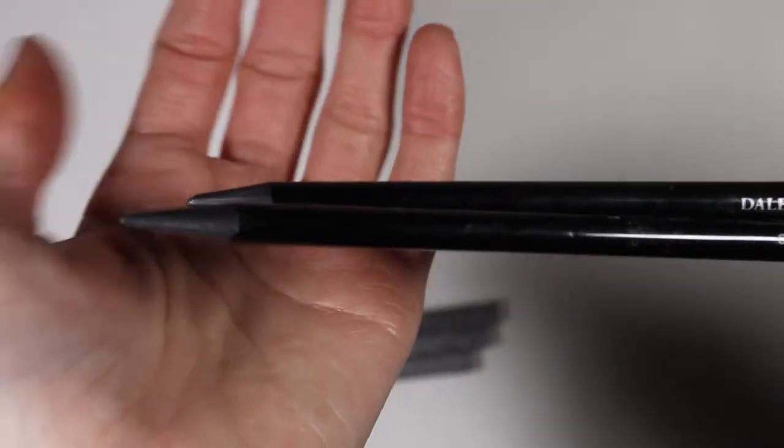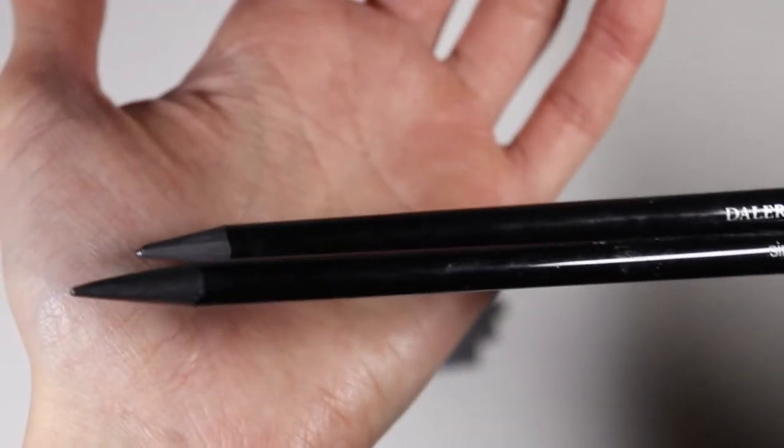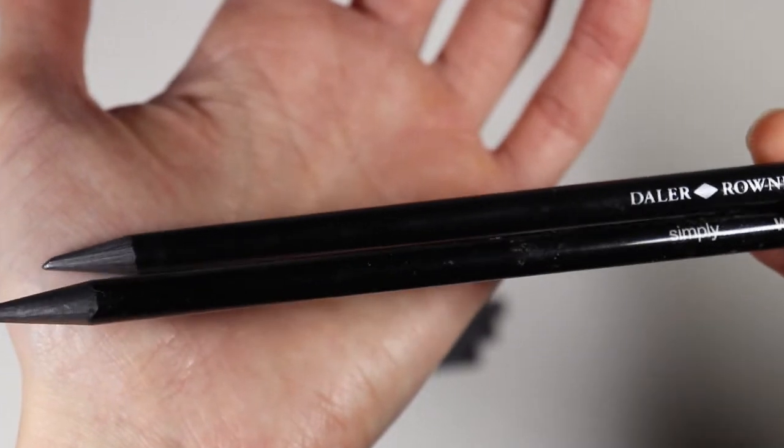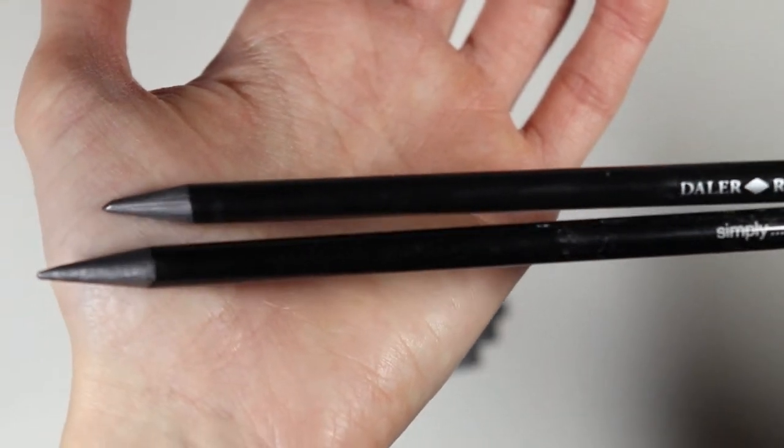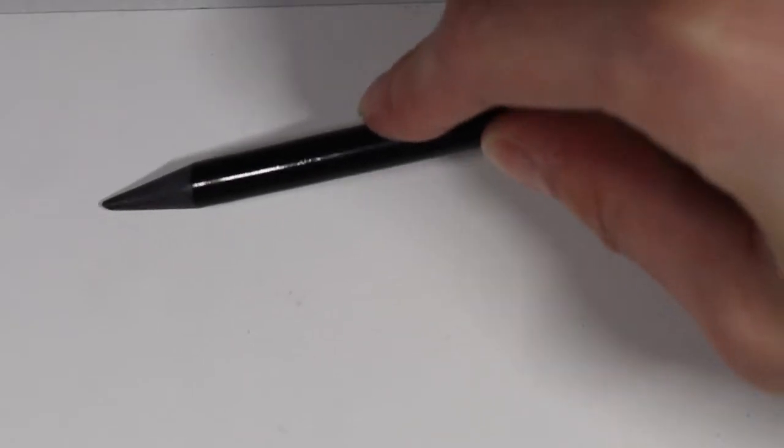If you are doing a graphite background or something that's going to be a large area that's going to take you a while to shade in, I really recommend using the side of these pencils. Since it's woodless you can actually use the side and you can cover large areas quickly.